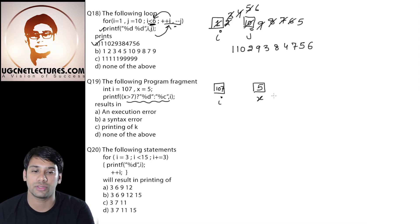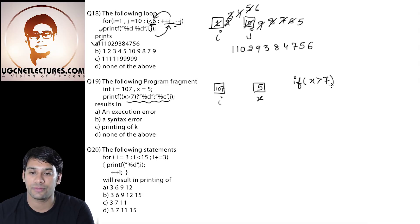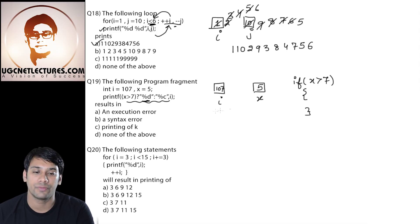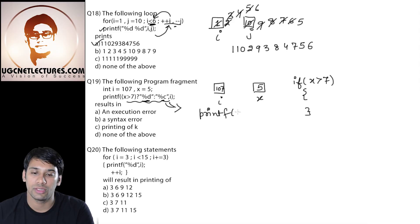We are just exploring this condition. If x is greater than 7, then we are going to use %d — that means this statement becomes printf("%d", i). If it is not greater than 7, then I am going to use %c. The value of x is 5, and 5 is not greater than 7. Therefore I am going to use %c, so this statement will become printf("%c", i).